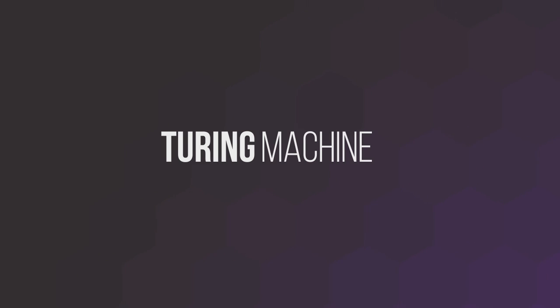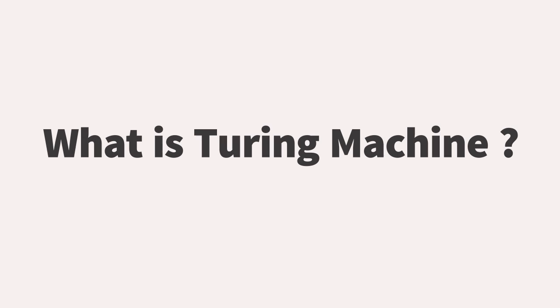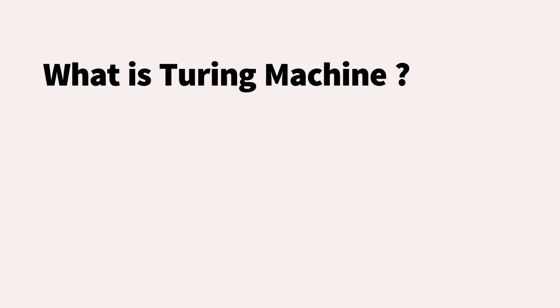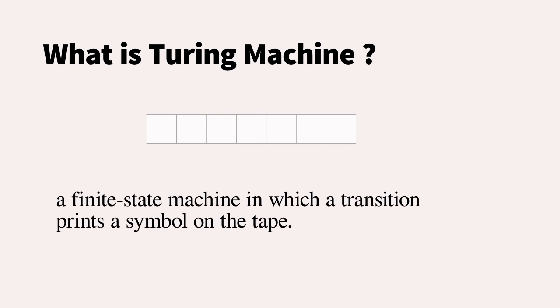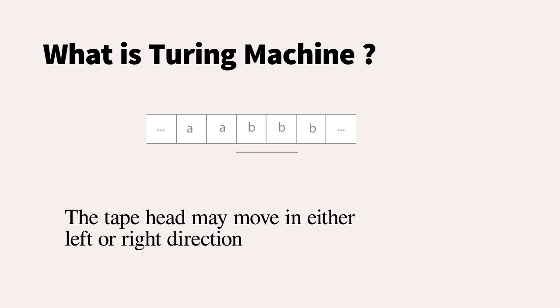What is a Turing machine? A Turing machine is a finite state machine in which a transition prints a symbol on the tape. The tape head may move in either the left or right direction.